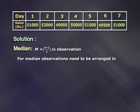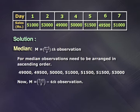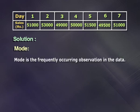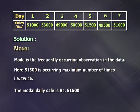For median, the observations need to be arranged in ascending order. The 7 days' sales arranged in ascending order are: 49,000, 49,500, 50,000, 51,000, 51,500, 51,500 and 53,000. The formula for median is the (n plus 1) upon 2 th observation. With n equal to 7, that is (7 plus 1) upon 2, which gives the 4th observation. The 4th observation is 51,000. So the median daily sales is rupees 51,000. For mode, it is the most frequently occurring observation. Here, 51,500 occurs the maximum number of times, that is twice. So the modal daily sales is rupees 51,500.